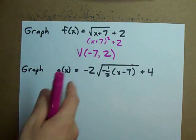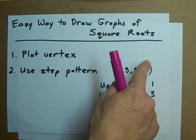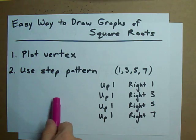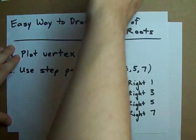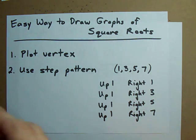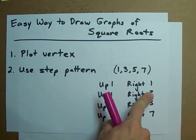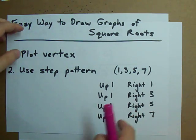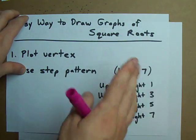Then we're going to use our step pattern and the deal with the step pattern is that it's one three five seven just like it is for a parabola. But for a parabola it's over one up one, over one up three, over one up five and it gets taller and taller as you move to the left or right. With a square root function it's up one right one, up one right three, up one right five, up one right seven. Be careful, you're going to get flatter and flatter as you move to the right.